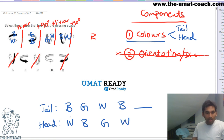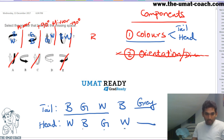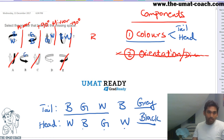Do you see how it is repeating? So black, gray, white, and then black — the answer should be gray for the tail. And black, gray, white — after white will come black again. So based on that, the only combination is gray and black, therefore the answer is in fact B.